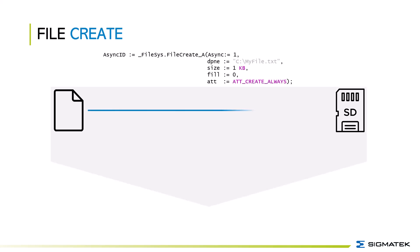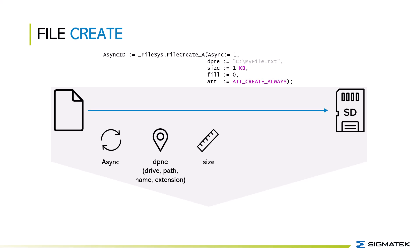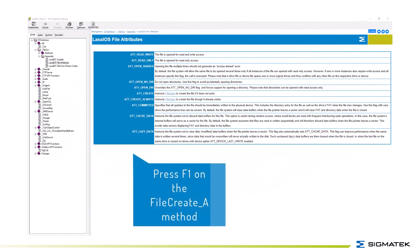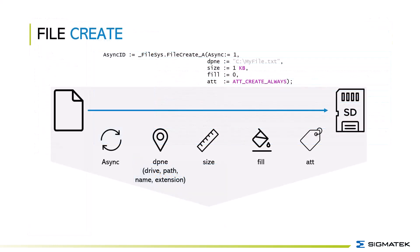When it comes to file handling you need to know a few basic functions. The file handling functions are found in the class _file_handling within the OS interface library. First is to create the file on the SD card of the control, done with the method file_create_a. Set the asynchronous parameter to one. For drive, path name, and extension you choose the path where you want to store the file. For size, it is important to set the file size large enough so you do not have to extend the file every time you write to it. Next is the value you want the file filled with, and at last you set the attribute. The attributes can be seen in the help file of _filesus in the appendix. This method returns an asynchronous ID, which is needed later to know the status of the asynchronous task — whether it is in progress or already finished.